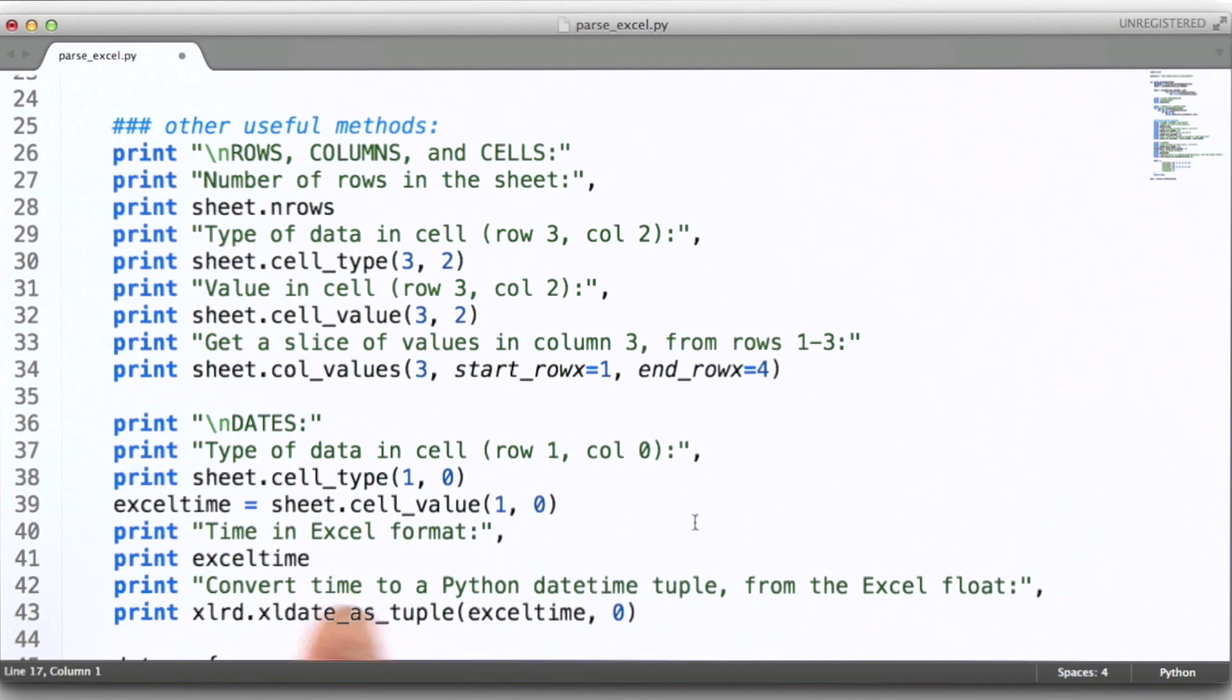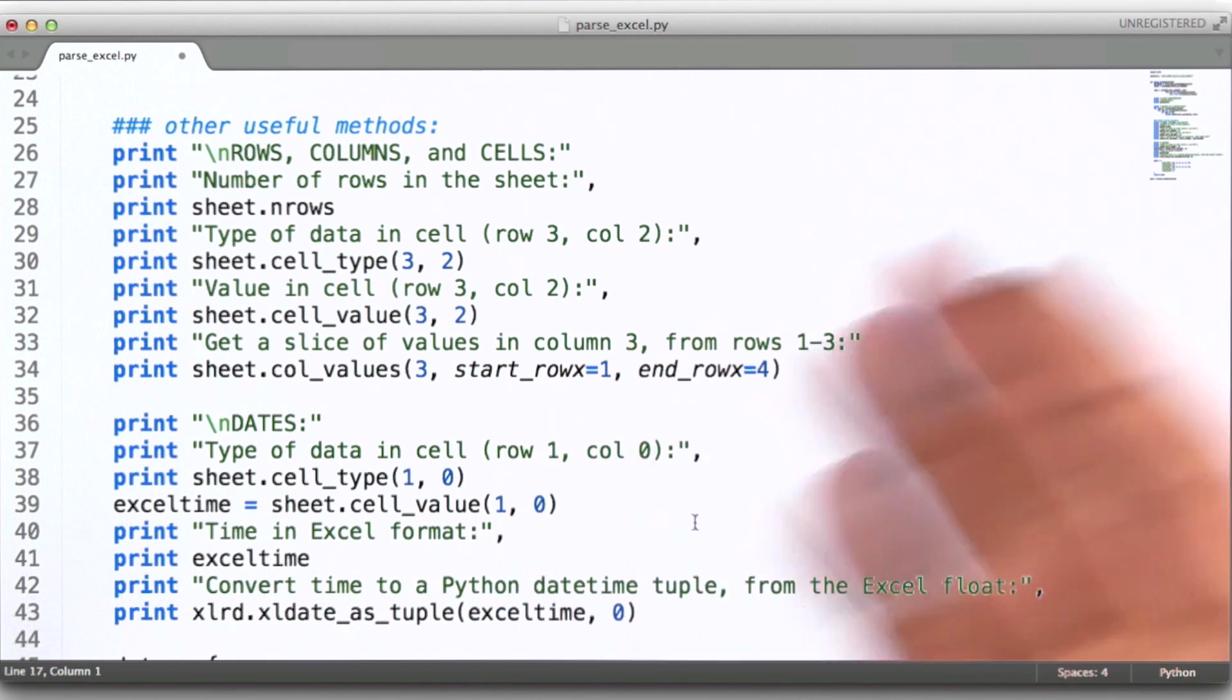So we're going to pull out the cell value. Now, it turns out that in the old Excel format, dates were represented simply as floating point numbers.